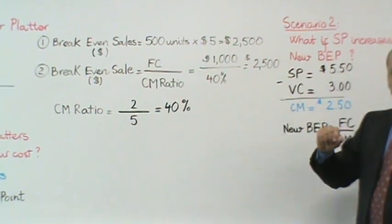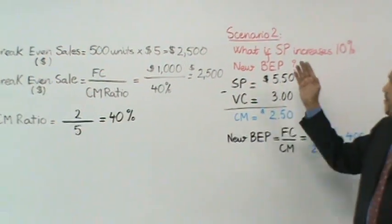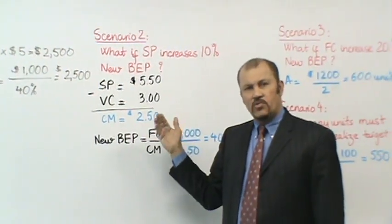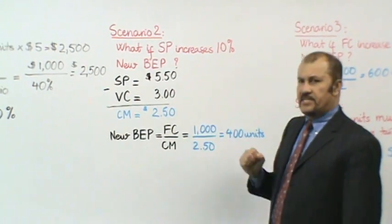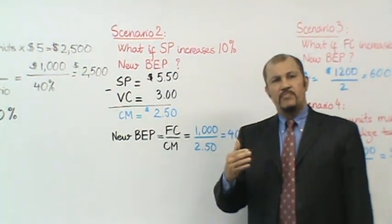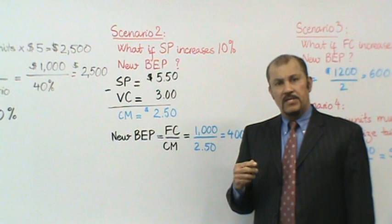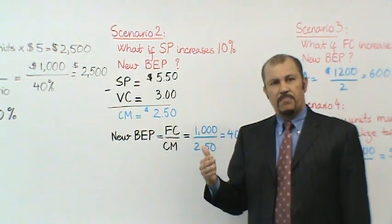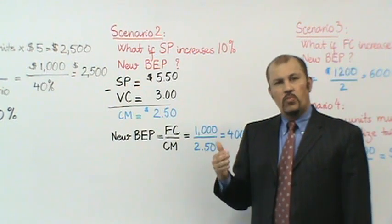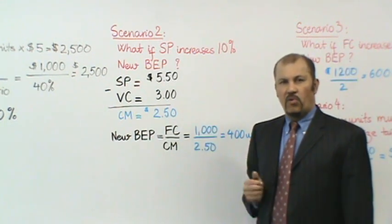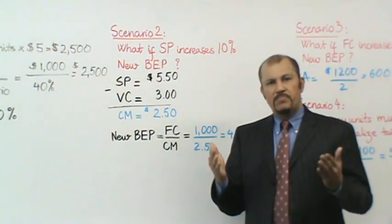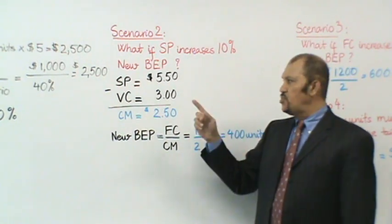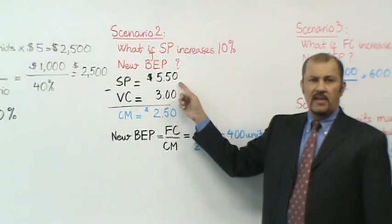Okay, so we've gone through this basic scenario one, where we've calculated the break-even in units and the break-even in dollars using two different formulae. Let's mix up things a little bit. Now, what if, scenario number two, what if my selling price increased by 10%? What would be my new break-even point?